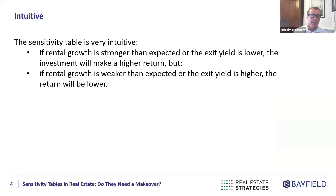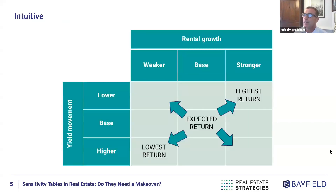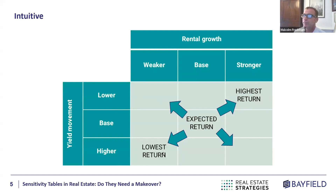The nice thing about the sensitivity table is it's very intuitive. If you get stronger rental growth and a lower exit yield you get your highest return. If you get weaker rental growth and a higher exit yield you get your lowest return, and then you've got the off-diagonals. It's very intuitive.